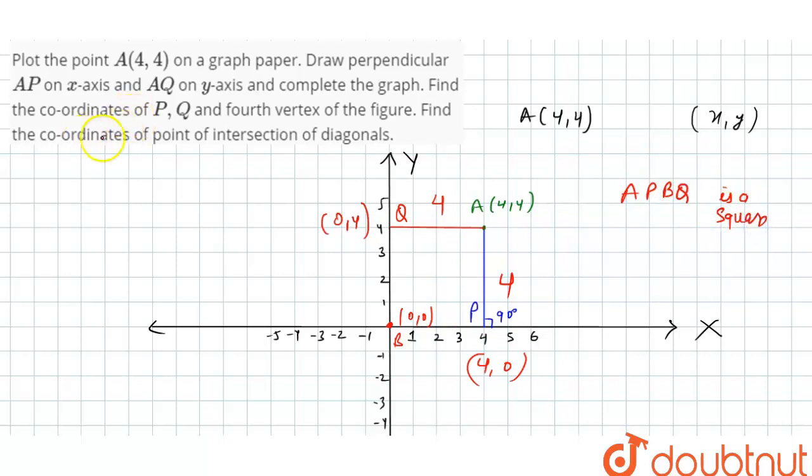Now we have to find the coordinates of intersection of diagonal. So now we will draw the diagonals, that is AB and PQ, AB and PQ. As we can see that this will be the intersection point. This point, at this point, the coordinate of X is 2 and Y is also 2.